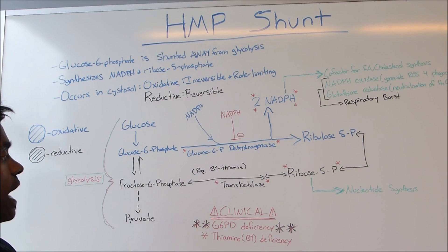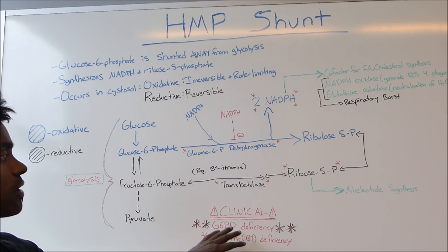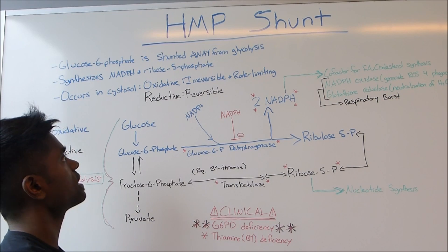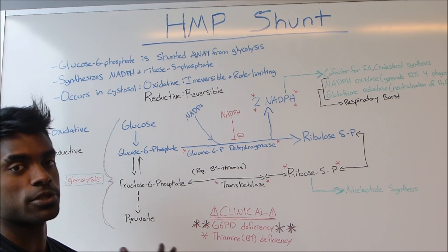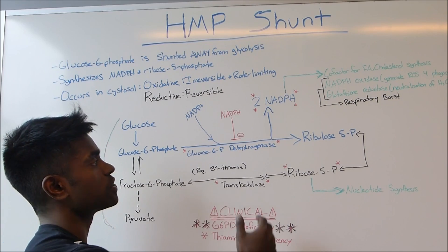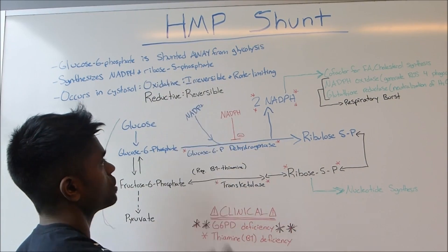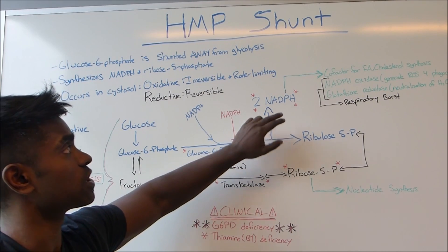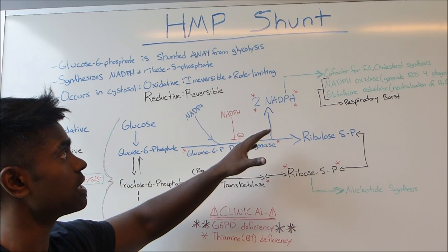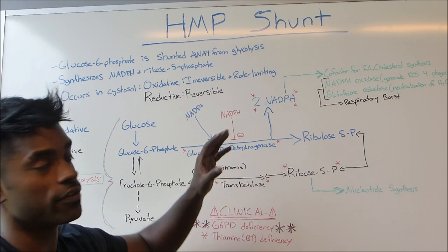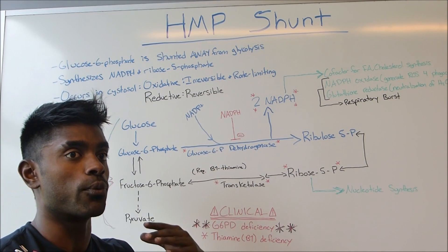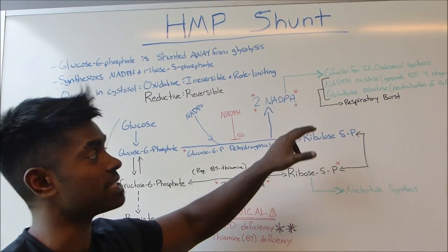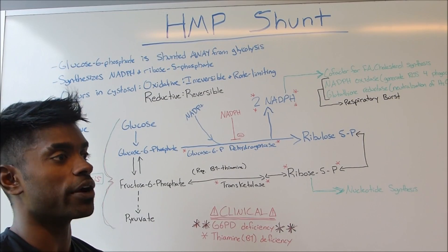Why exactly does this shunt exist? The shunt exists in order to create these two products. NADPH is used as a cofactor for fatty acid and cholesterol synthesis, and also — if you look back to my video on respiratory burst — it's used as a cofactor for NADPH oxidase, the enzyme required in the activation phase to make reactive oxygen species for phagocytosis to occur.